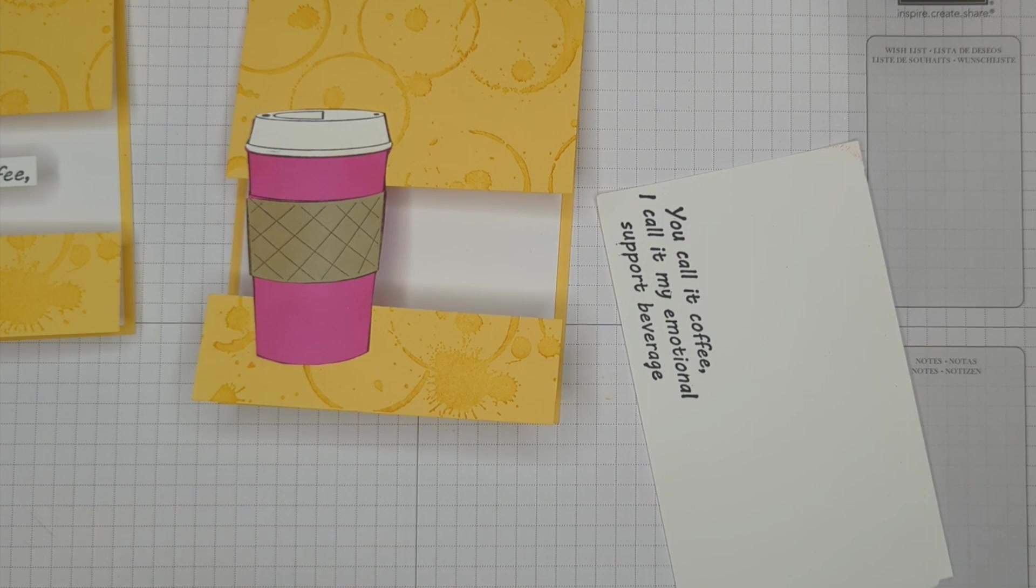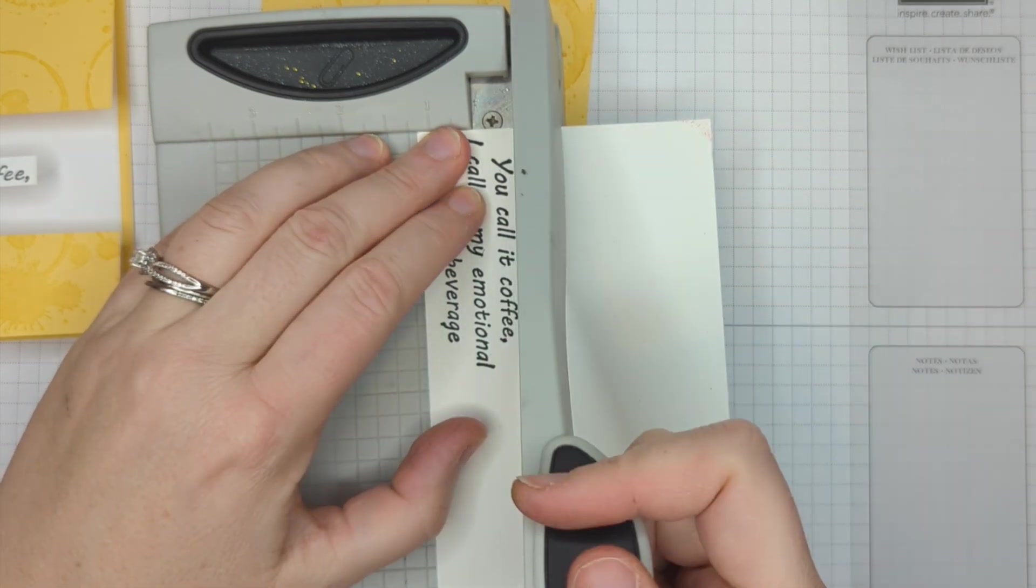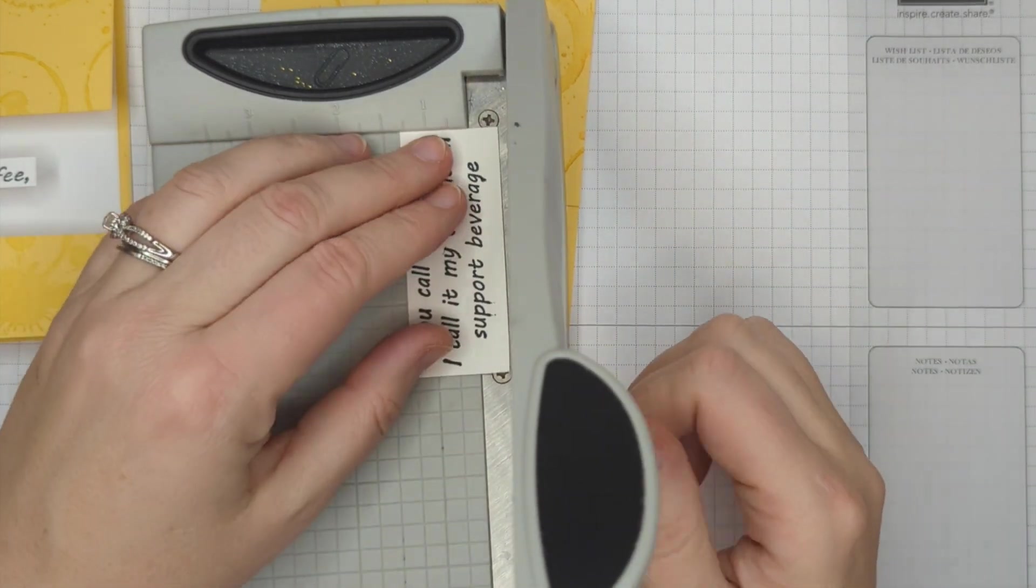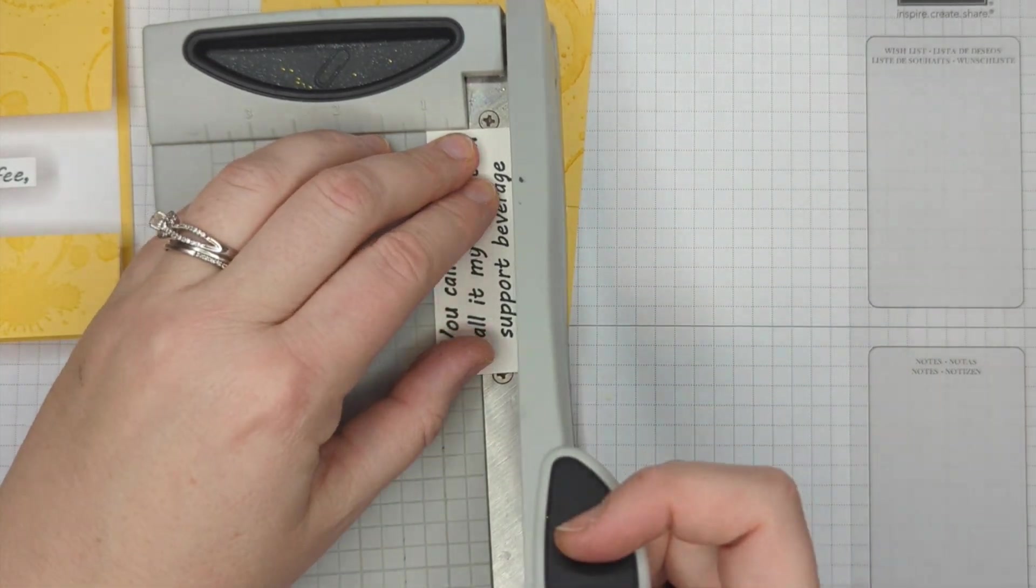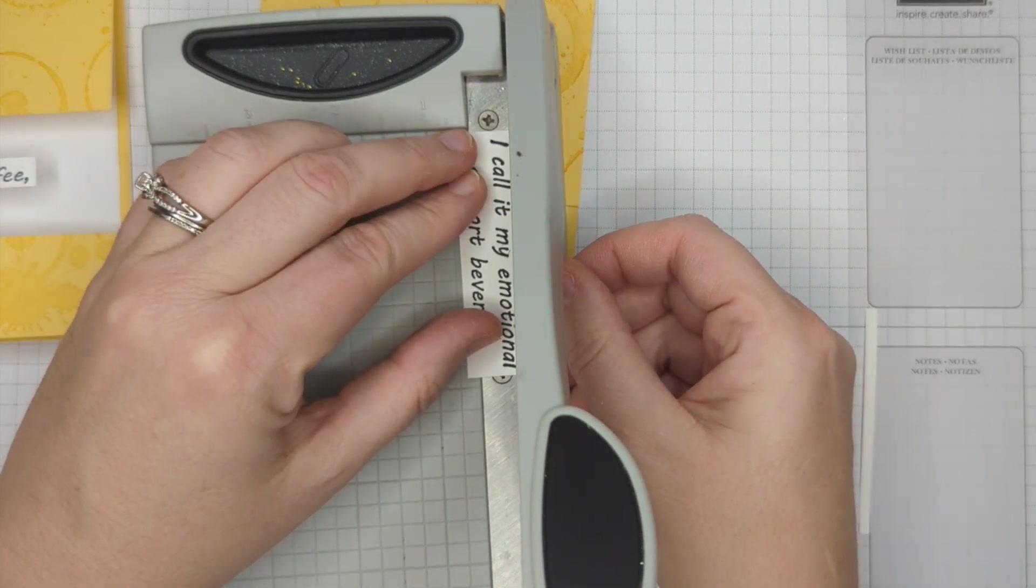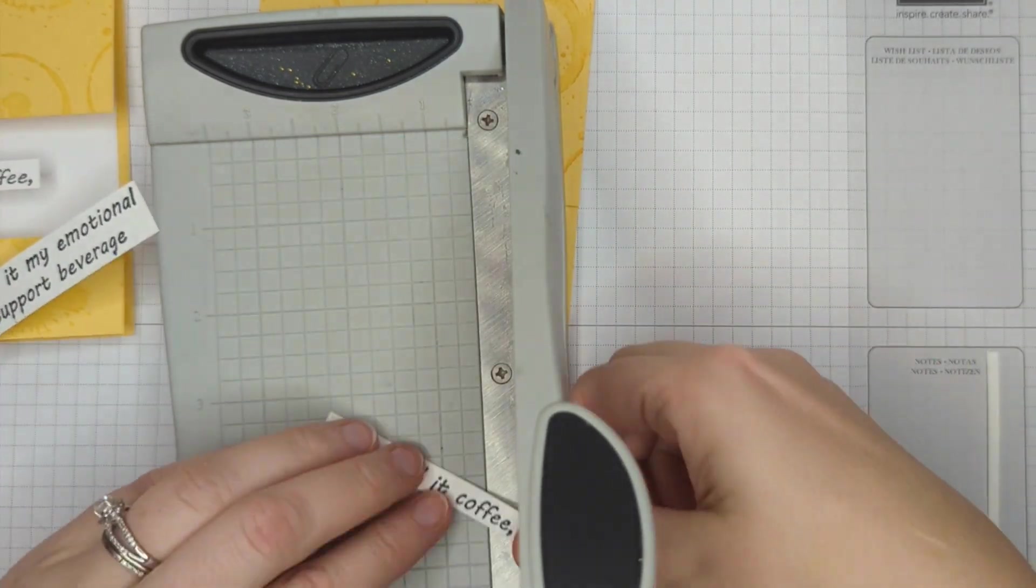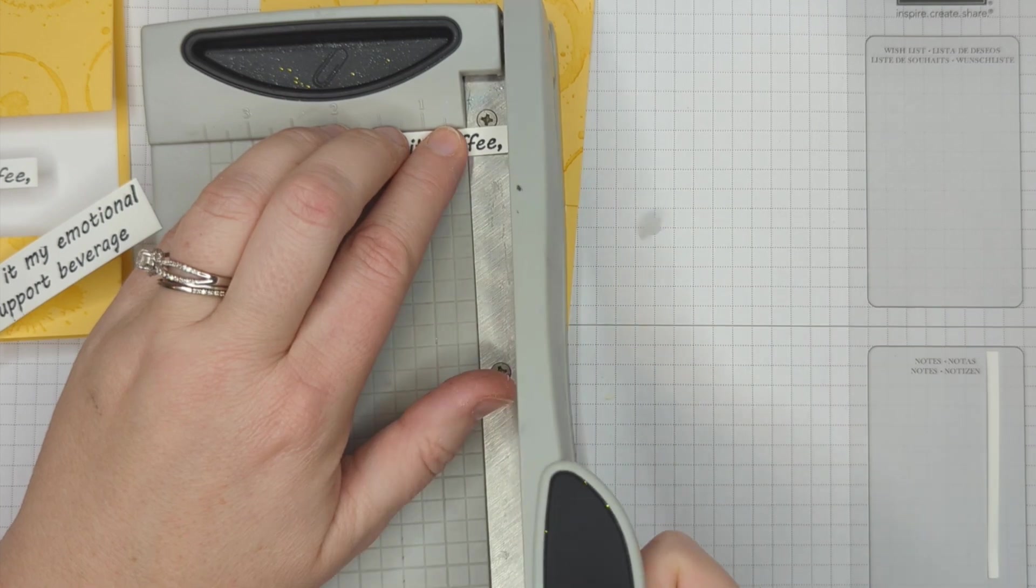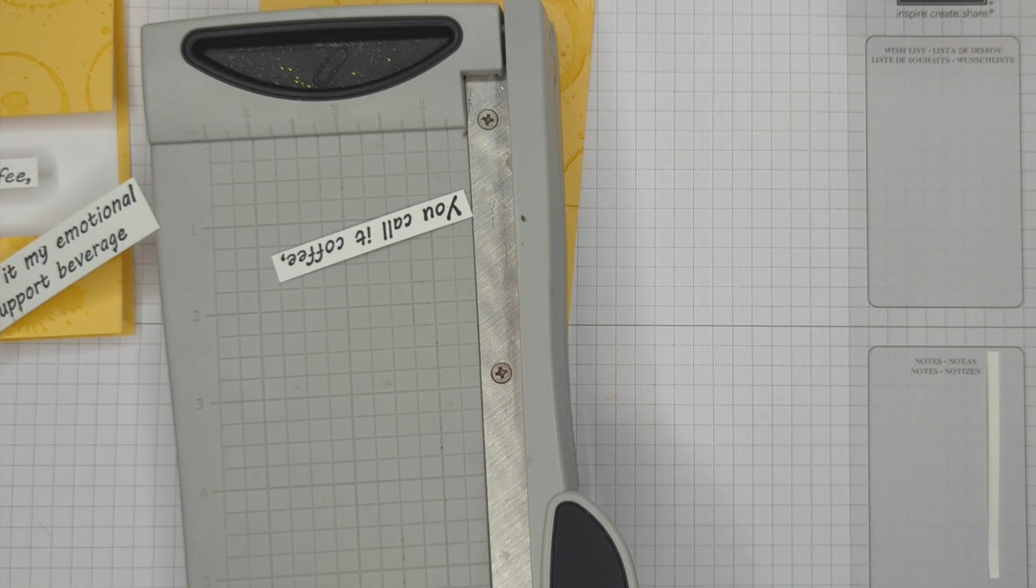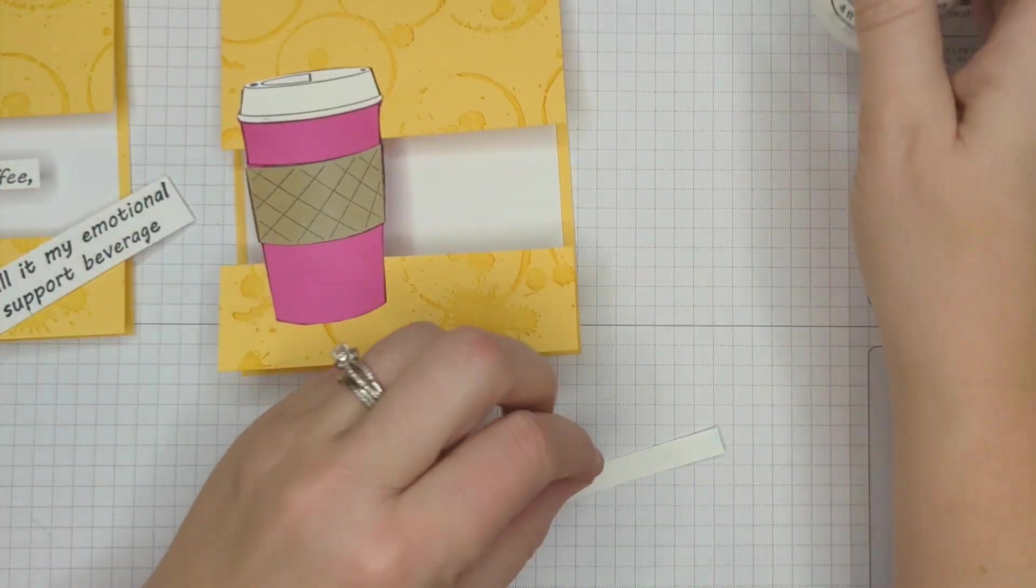So what I'm going to do is use my paper trimmer here to create a floating sentiment. And this is really also easy to do and kind of adds a little bit of a wow factor. Just trimming off all the extra white here. And then I'm going to trim the top line off. And I can even shorten this up a little bit. You could make the ends like dovetailed or whatever you want to do.